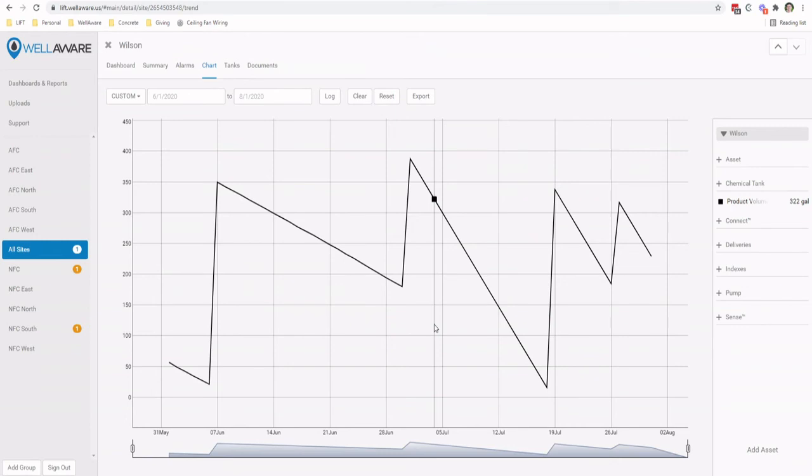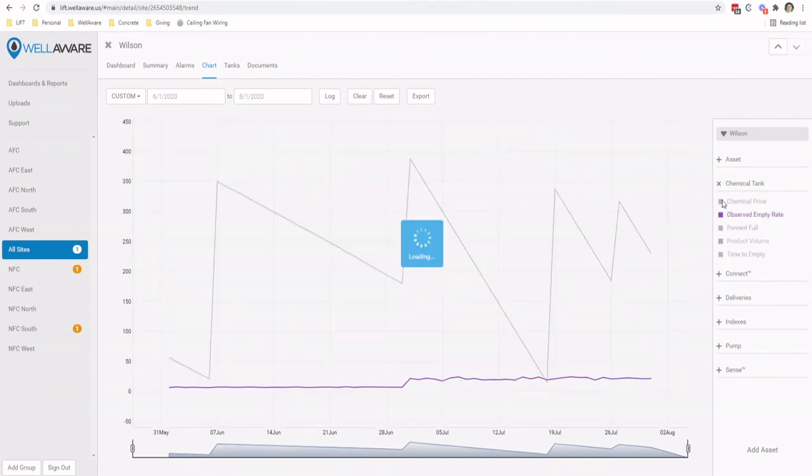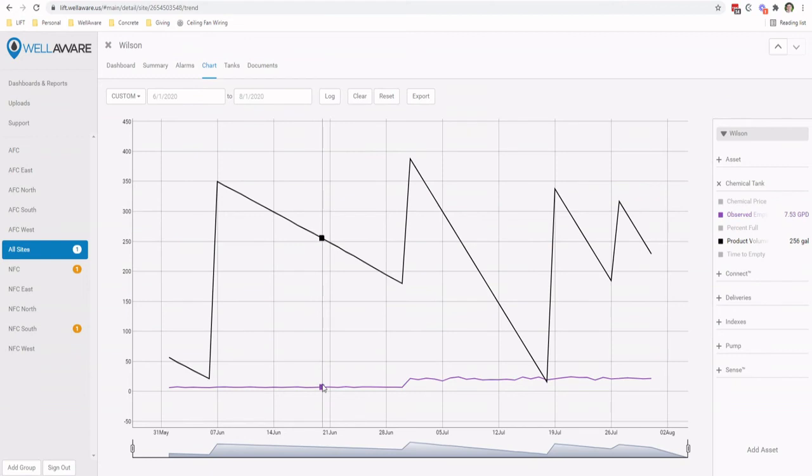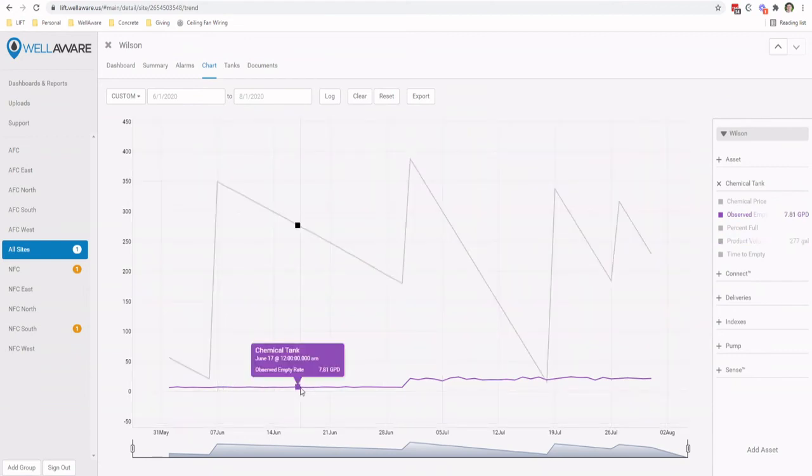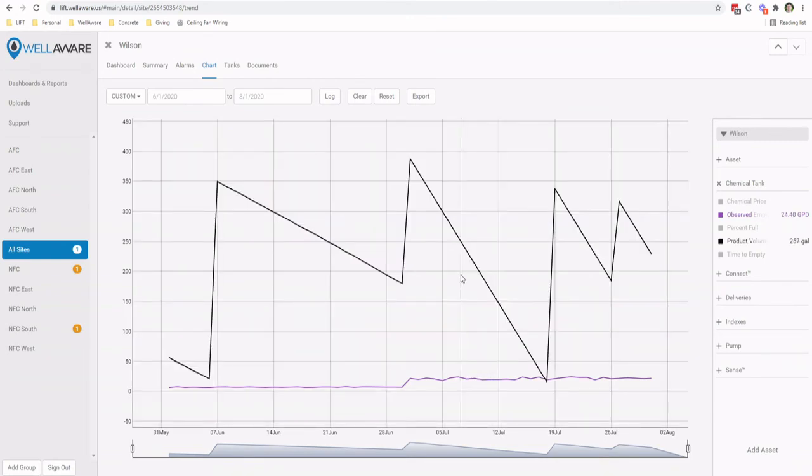Because we automatically calculate the observed empty rate using some advanced analytics on this product volume data. And so I'm going to add the observed empty rate to this trend screen, and you will actually see it here in this purple line. So during this period of time, we can see that the tank is emptying at around 6 to 7 gallons per day, and then after this particular delivery, that empty rate jumps up to around 20 to 21, 22 gallons per day. So we can see that the rate at which that tank is emptying actually nearly triples in this time period. We need to account for that.